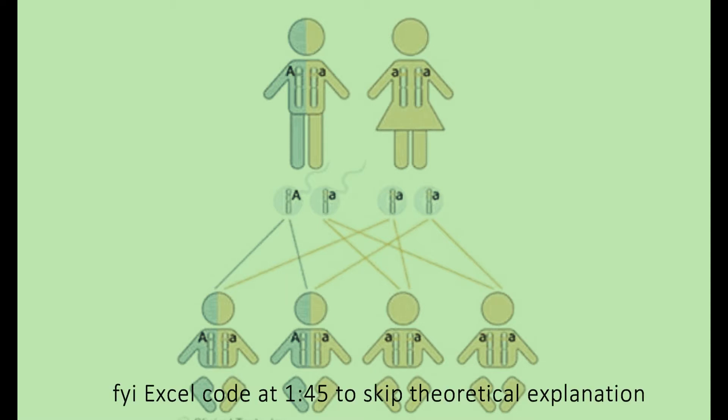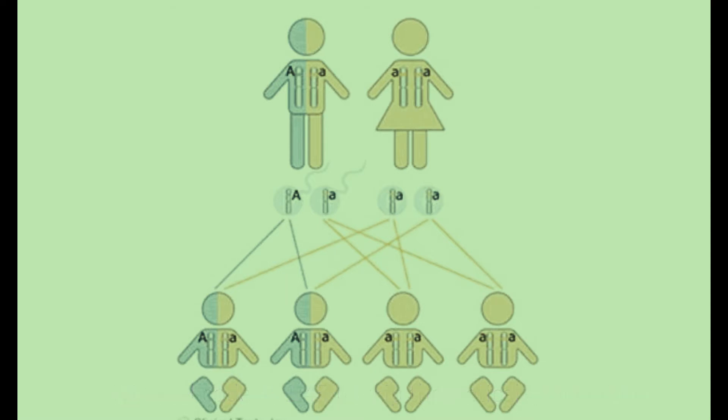An idea of additive genetic variance is important before we move on. An allele's independent effect on a specific phenotype can cause a phenotypic deviation from the mean phenotype, and it is a source of heritable variation. The resemblance between parents and offspring is entirely due to the additive effect that genes have on a phenotype.